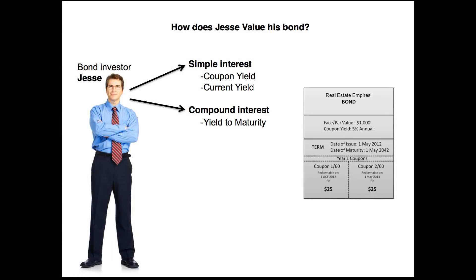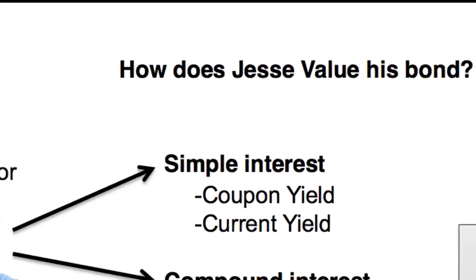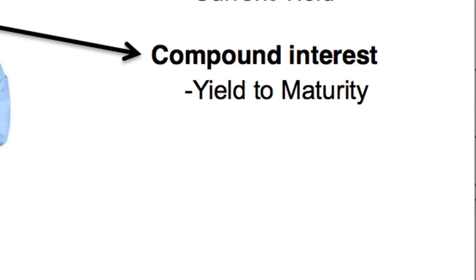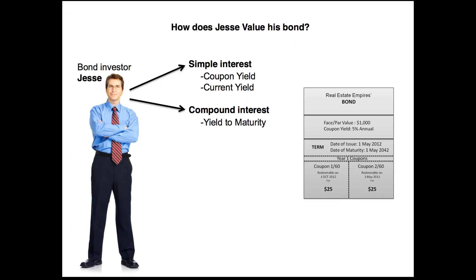As you can remember from the second lesson, we have our bond investor Jesse, and he has his bond from Real Estate Empires. We're going to look at different ways Jesse can value this bond. There are two different ways: simple interest and compound interest. Under simple interest we have the coupon yield and the current yield, and under compound interest we have the yield to maturity — which is really the thing we need to understand at the end of this lesson.